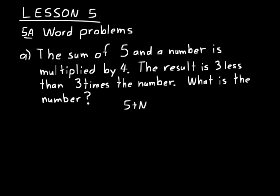The sum of five and a number is multiplied by four, so we multiply that by four. The result — we put an equal sign. That word 'result' means equals. The result is three less than three times the number. If we had three times the number and took three away from that — that's what 'three less than three times the number' means — so we have 3n, and three less than that would be 3n minus three.